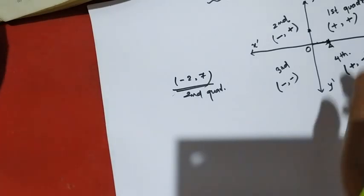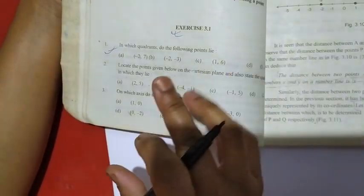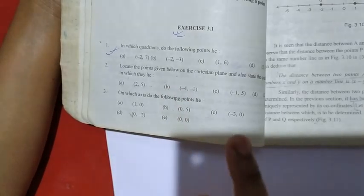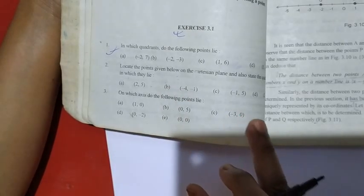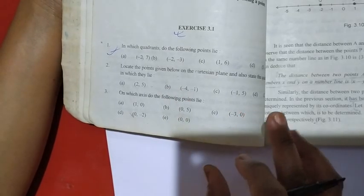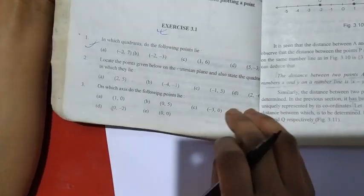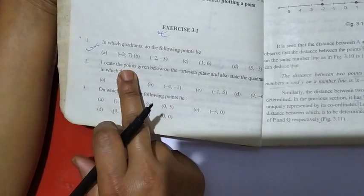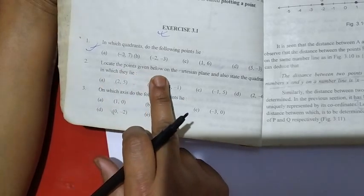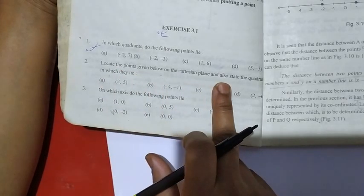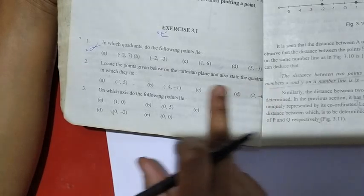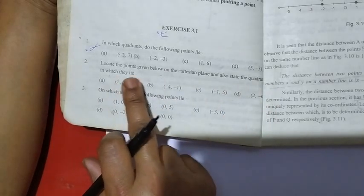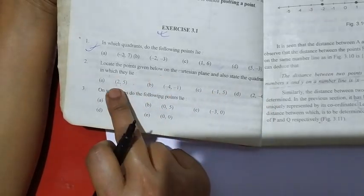Question number 2: locate the points given below on the Cartesian plane, and also state the quadrant in which they lie.